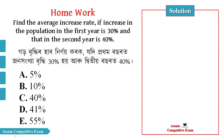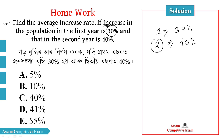First question: Find the average increase rate if the increase in population in the first year is 30% and in the second year is 40%. So the first year is 30% and the second year is 40%.